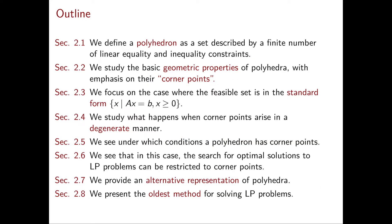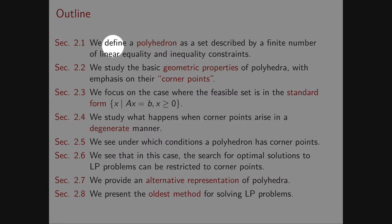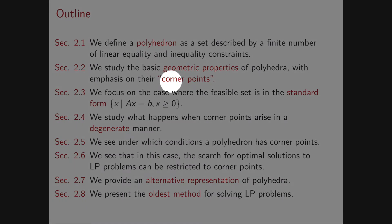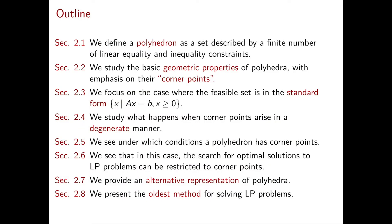This is the outline of the chapter. The first thing we will be doing is to define what a polyhedron is — the set described by a finite number of linear inequality and equality constraints. Polyhedra correspond to the feasible region of a linear programming problem. Next we're going to study some basic geometric properties of polyhedra, and in particular their corner points, which we briefly discussed in the previous chapter.